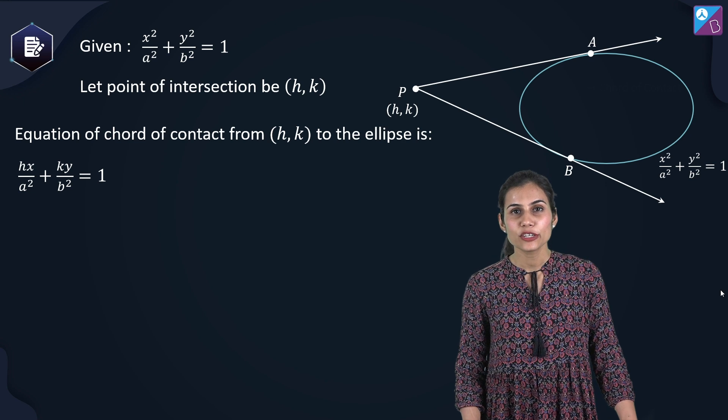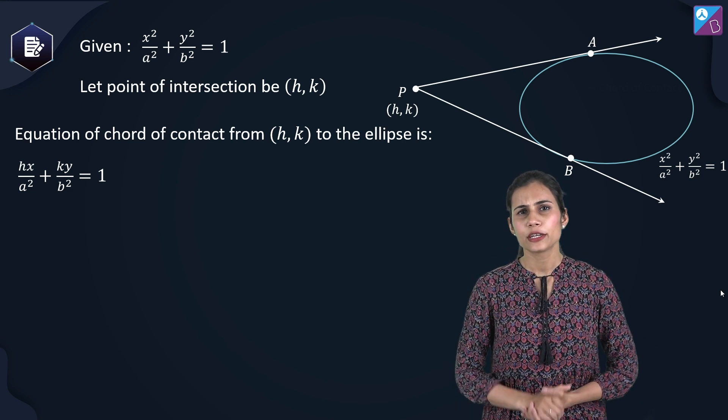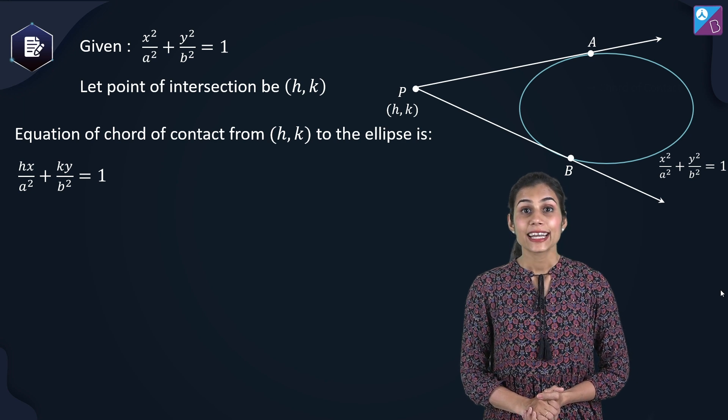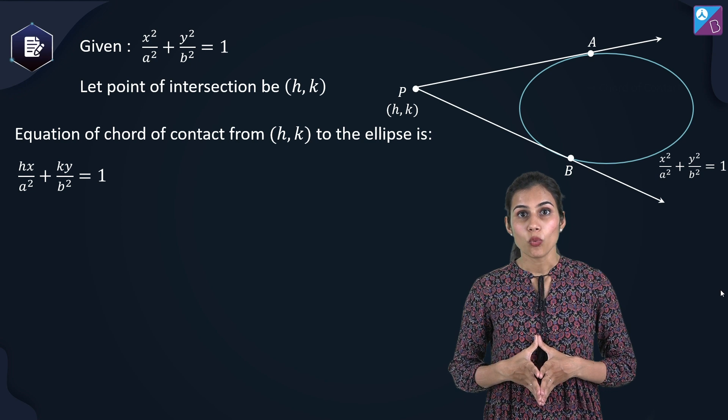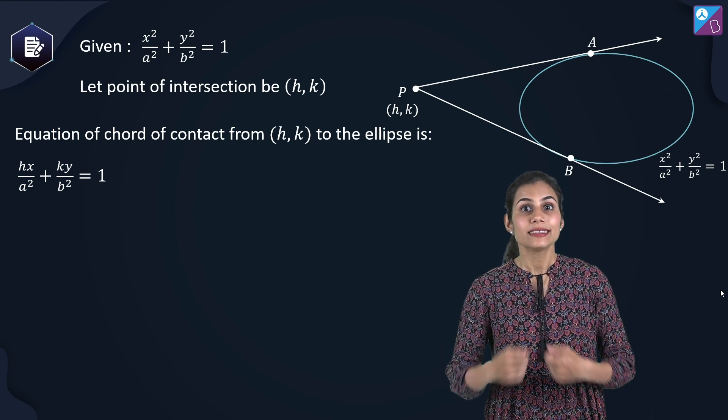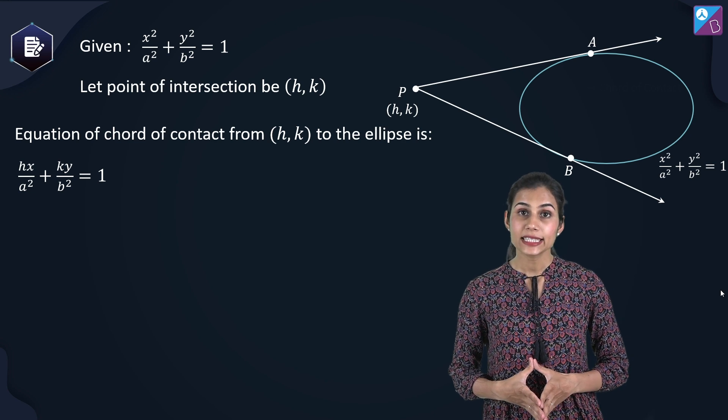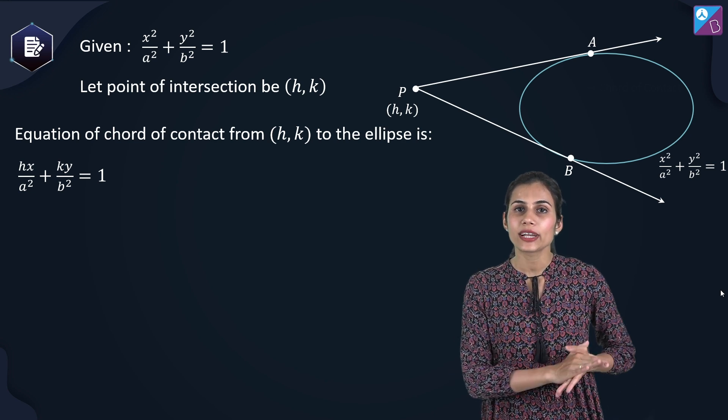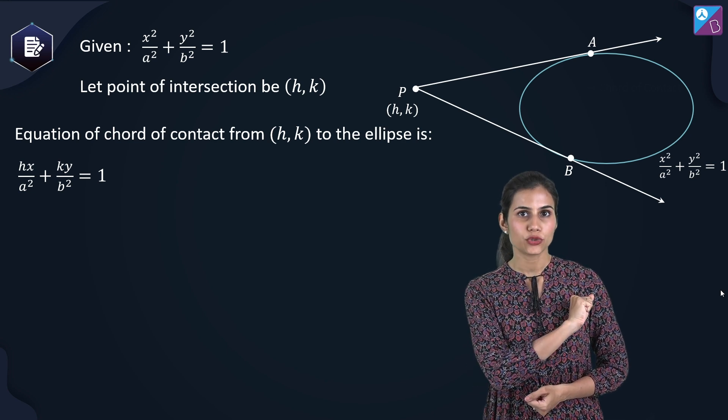So starting with this standard horizontal ellipse, here consider AB to be a random focal chord. Now we are going to draw tangents at point A and at point B. Why? Because we need to consider tangents at the extremities of the focal chord. Both these tangents are going to intersect each other at an external point, let's call it P. And this is the point whose locus we need to compute.